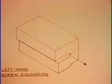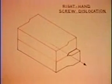The screw dislocation may have either a left hand or a right hand twist. The Burgers Vector of one is the negative of the other.